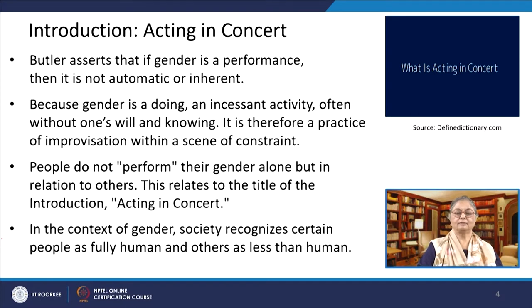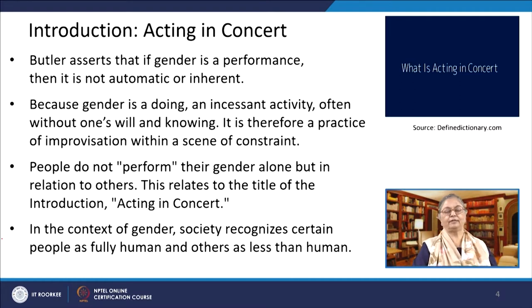Butler maintains that norms are necessary and yet must be exceeded in the name of the future of humans. Perhaps more overtly autobiographical than any previous books, Undoing Gender asks what makes a gender livable. The title is highly suggestive — through it she wants to suggest that a normative conception of gender can limit the understanding of one's personhood, and undoing this normative restriction is something she attempts to achieve through this work. Butler asserts that if gender is a performance then it is neither automatic nor inherent, because gender is a doing, an incessant activity often without one's will and knowing. It is therefore a practice of improvisation within a scene of constraint. People do not perform their gender alone but in relation to others, which relates to the title of the introduction: acting in concert.